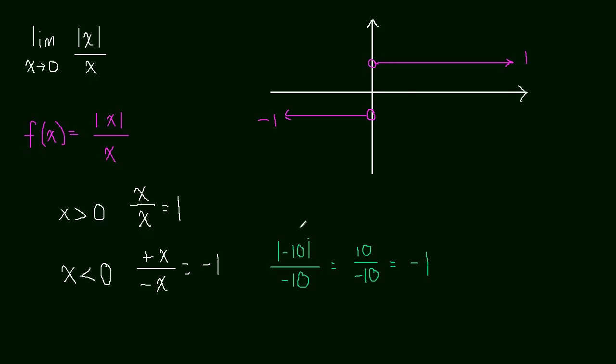And you can see that it doesn't matter if you plug in negative 10, or negative 3, or negative pi. Any negative number, this is how it's going to turn out. The positive of the number over the negative of the number will just be negative 1.